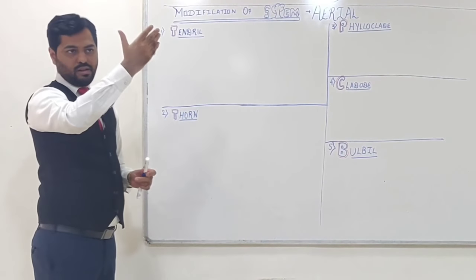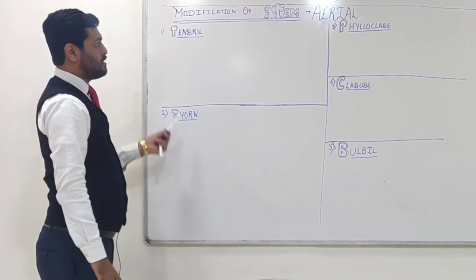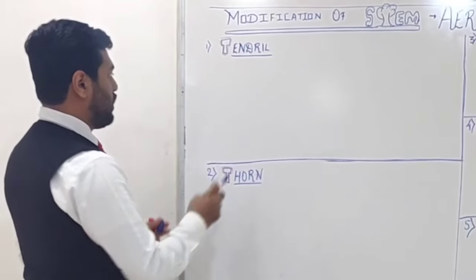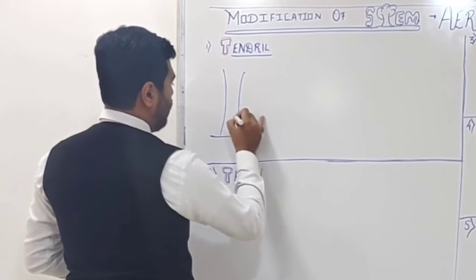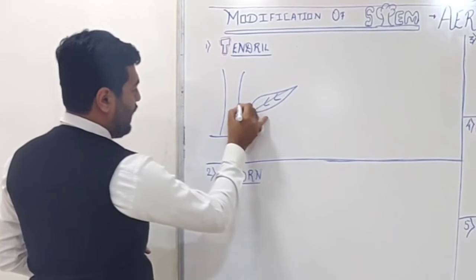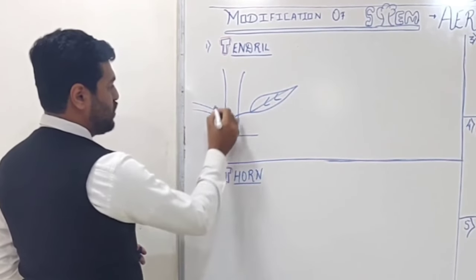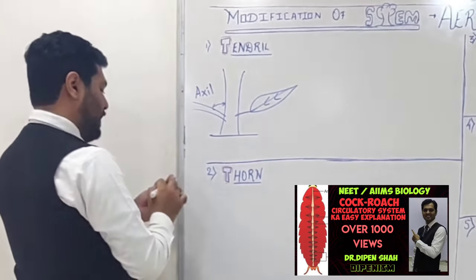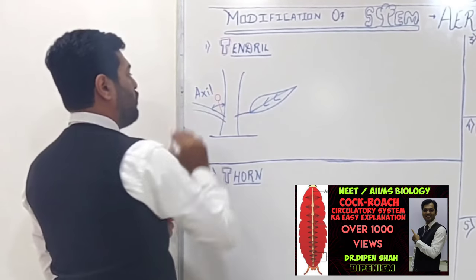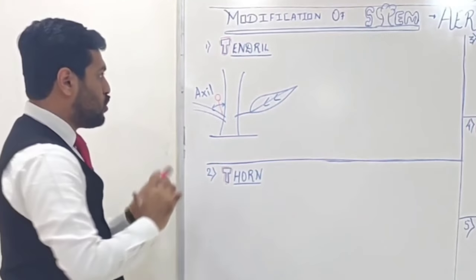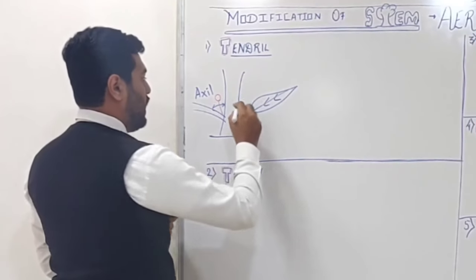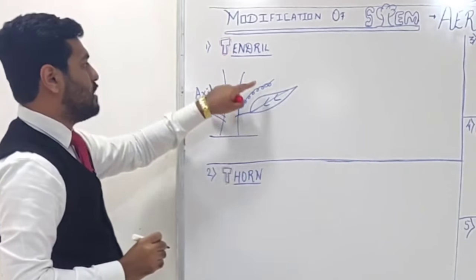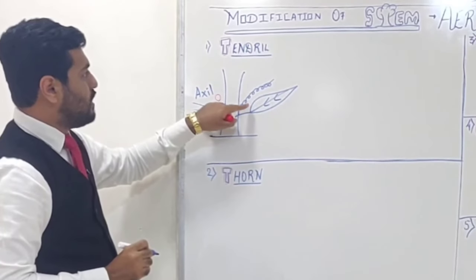Completely erect plant parts in air contact: tendril, thorn, phylloclade, cladode, and bulbil. For tendril, the stem or leaf - the angle between stem and leaf, or stem and branch, is called the axil. There, a bud develops called the axillary bud. In tendril, the axillary bud is modified into thin, coiled, and wire structure.